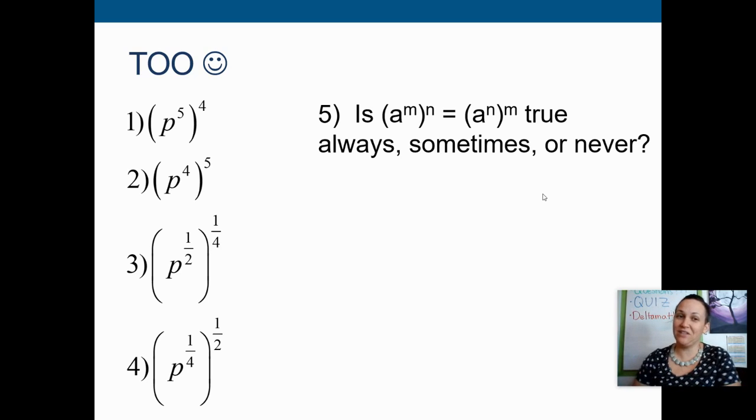Okay, hopefully you already wrote down your answers now. These were kind of grouped together in a way to help you answer question number five. So questions one and two both have the same answer, which is p to the 20th. And questions three and four also both have the same answer, which is p to the one-eighth.